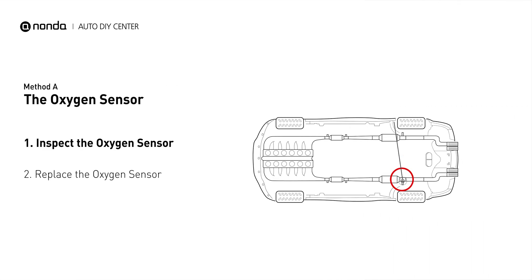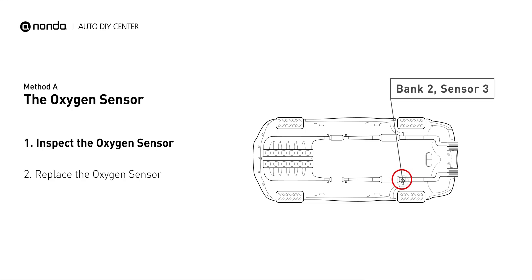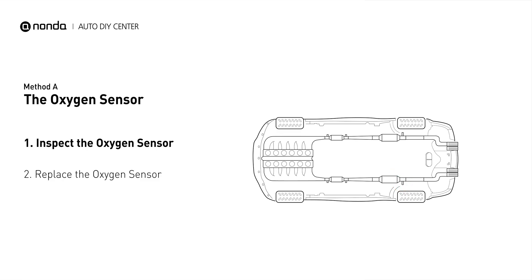This oxygen sensor is located right after the catalytic converter. Bank two is on the side with cylinder number two. Sensor number three is downstream of the last catalyst in the exhaust system.